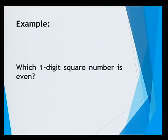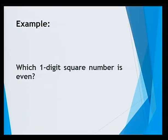Now try to think of this: which one-digit square number is even? I'm sure you must have thought of the correct answer, that is 4. 4 is a one-digit square number which is at the same time even.